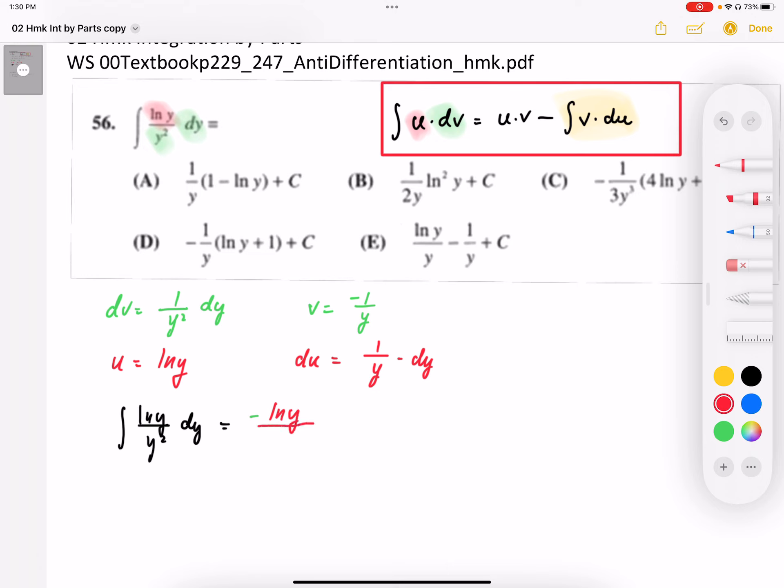And then minus—this is the part that's important—this new integral that we generate needs to be something that we can anti-differentiate. So when I put v du together, I'm going to end up with negative one over y squared.